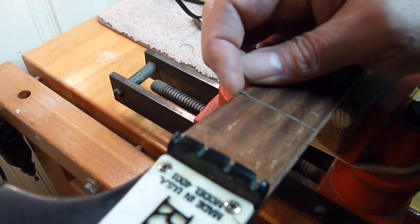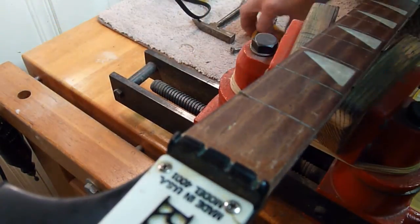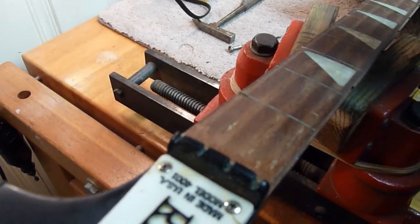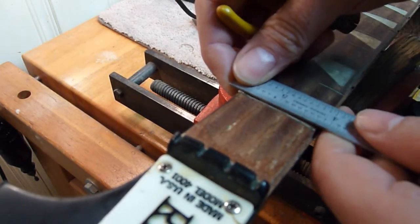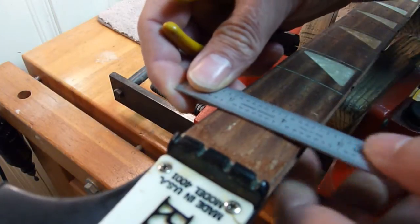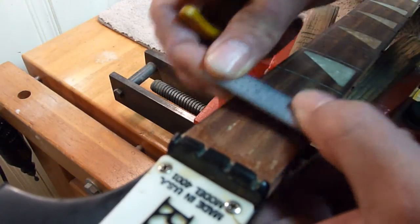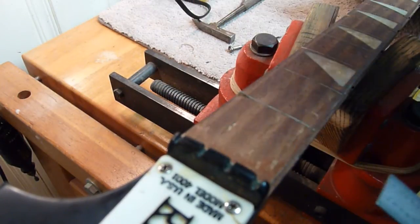As you can see, I managed to get the end of the fret up just enough that I can grab it with my fret pullers. But if you noticed, I was using this 6-inch steel rule to press the rosewood back down because it wants to chip up.